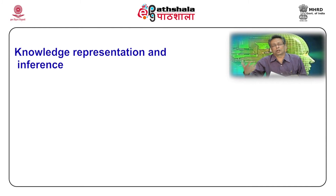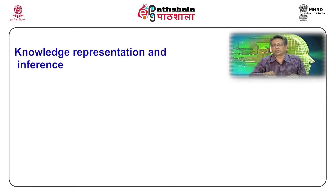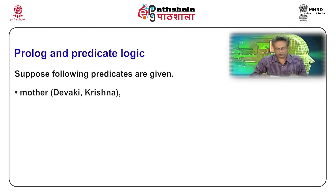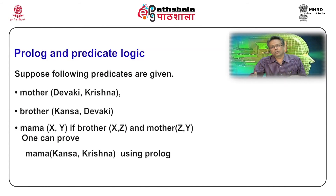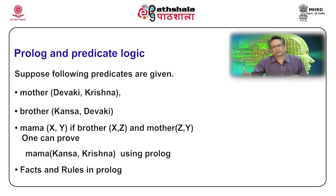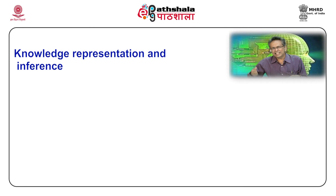The second aspect of AI techniques: how will you store information and how do you infer from it? For example, in Prolog — a language very powerful and useful in AI — you can see three predicates: mother(Devki, Krishna), brother(Kans, Devki), and mama(X,Y) if brother(X,Z) and mother(Z,Y). From this, you can prove that Kans is the mama of Krishna. The first facts describe data and knowledge; what we prove is called inference. So how you store information and achieve inferences is what is needed in AI technique.